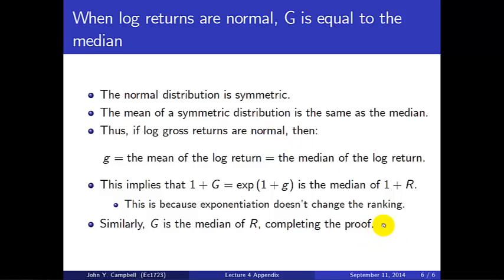Okay, so hopefully that makes those two properties clearer: the argument for why the arithmetic average must always exceed the geometric average, and the argument for why when log returns are normal, G equals the median return. Thank you.